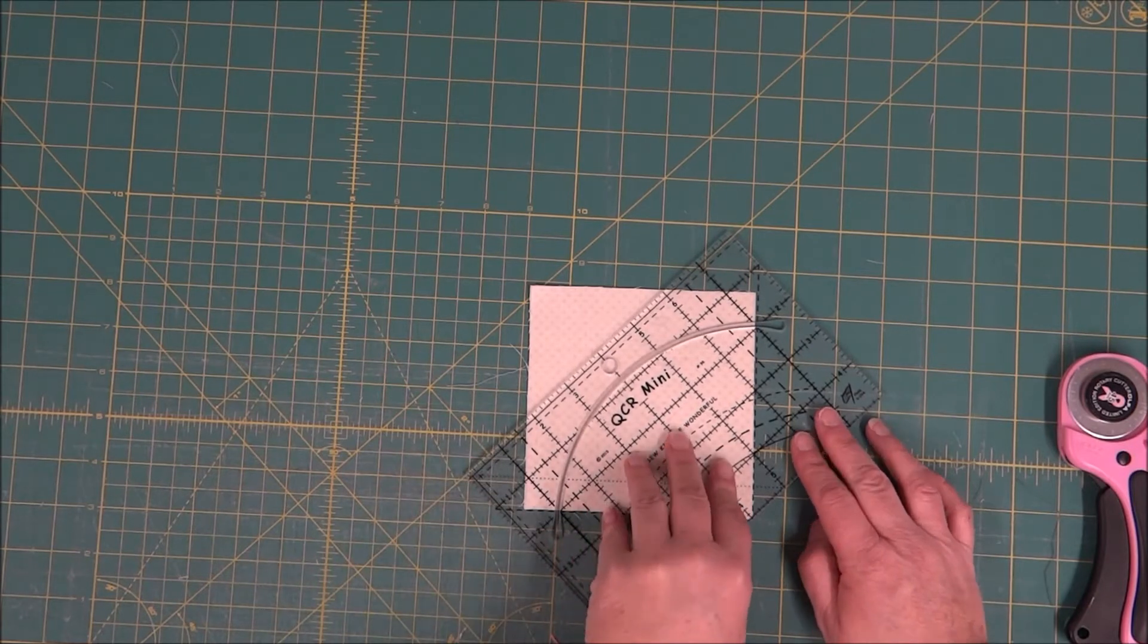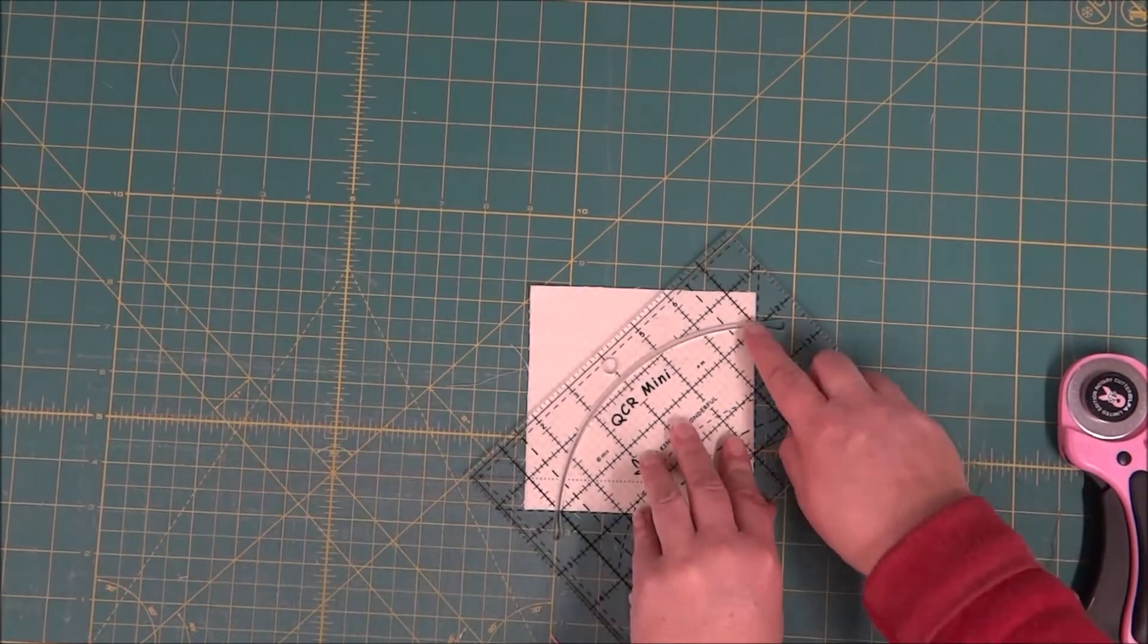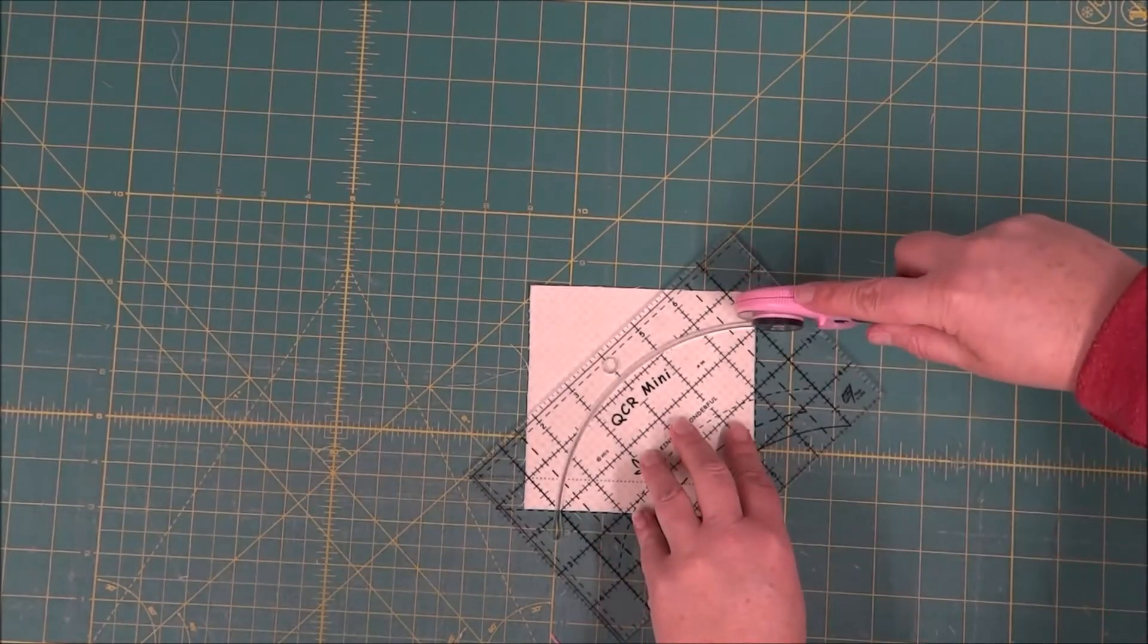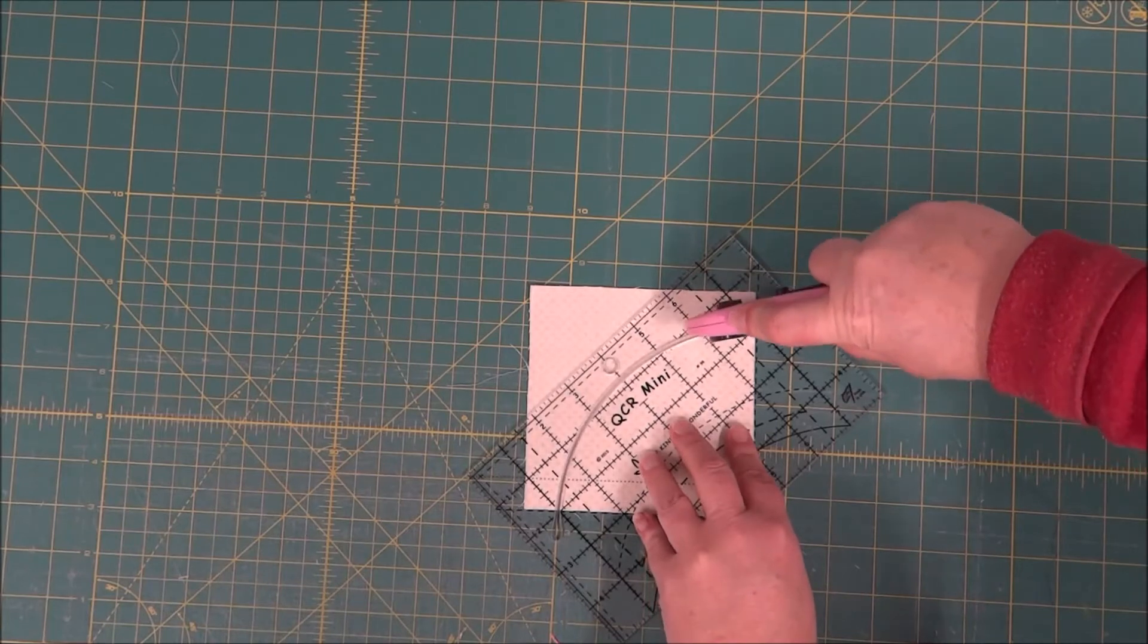Then I'm going to use my rotary cutter and cut in this groove line. This groove is going to be my guide, so you can kind of go slow because it's a curve.